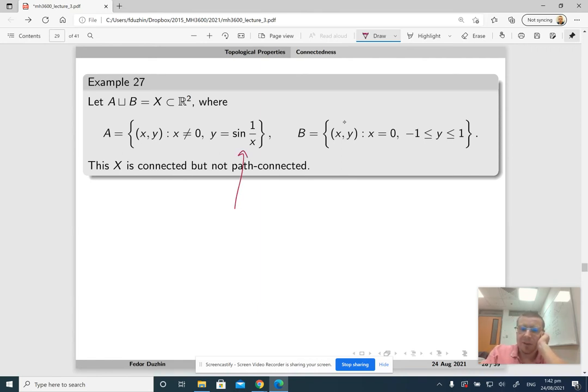Which is why we want to assume that x is not zero, and we combine them with, take the union of this with the interval on the y-axis from negative one to one. Let me show you the picture.